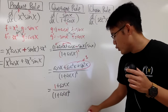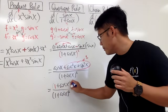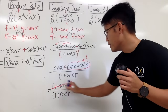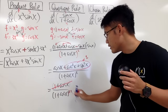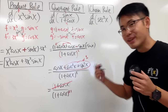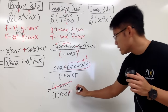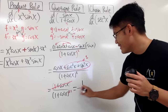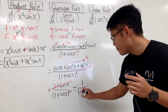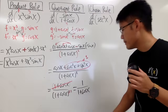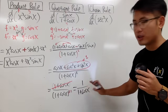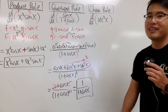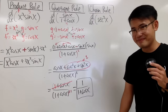So in the end, we get just 1 over 1 plus cosine x to the first power. So this right here is it.